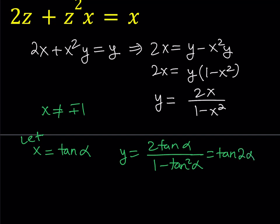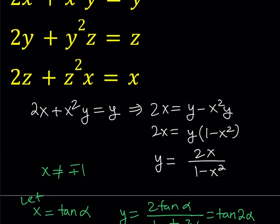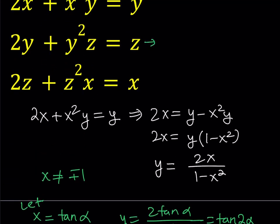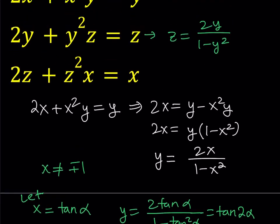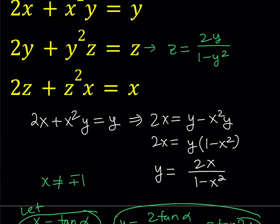What this gives us is y equals tangent 2 alpha. Now if you look at the second equation and manipulate it the same way — isolate z and factor out y squared minus 1 — you get z equals 2y over 1 minus y squared. Since y equals tangent 2 alpha, substituting gives 2 tangent 2 alpha over 1 minus tangent squared 2 alpha, which is the double angle formula again, giving tangent 4 alpha.